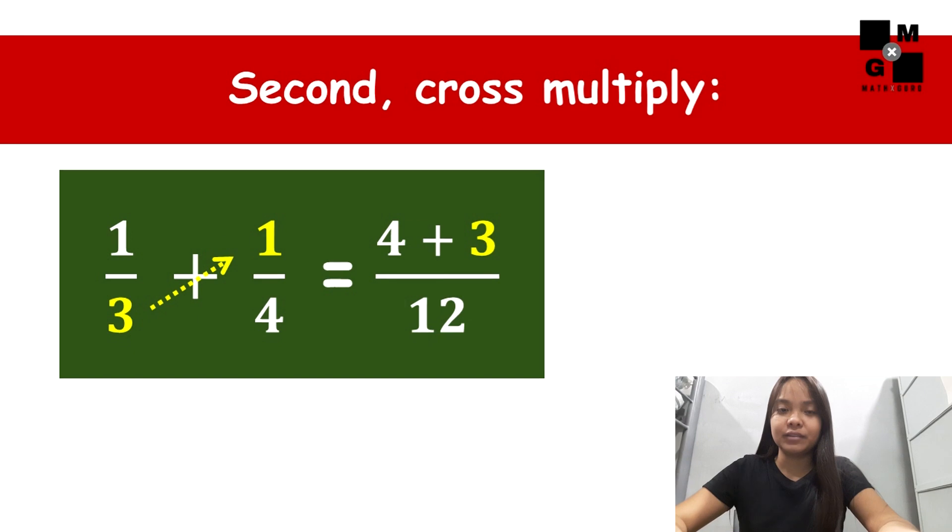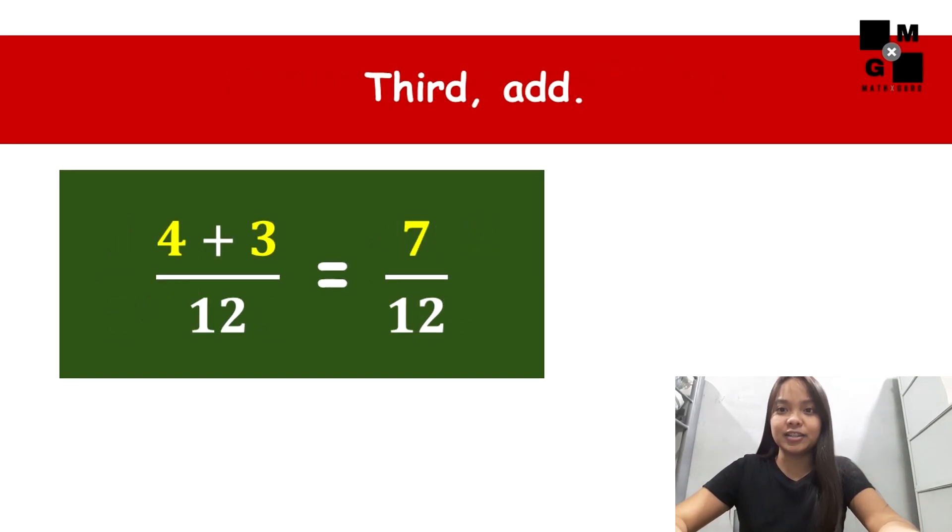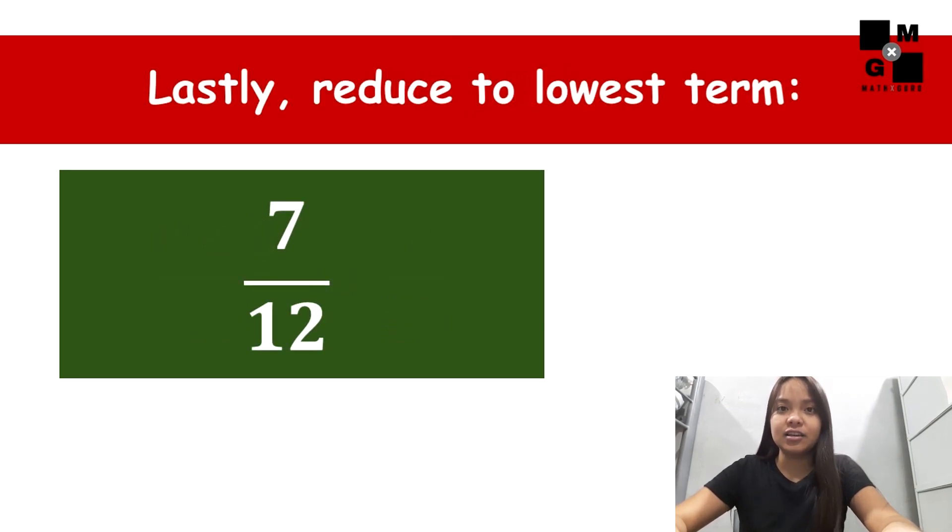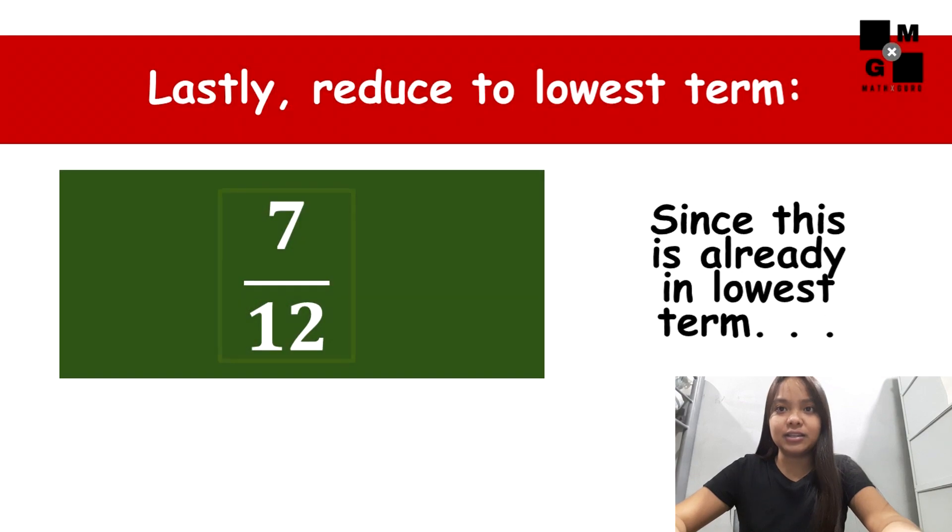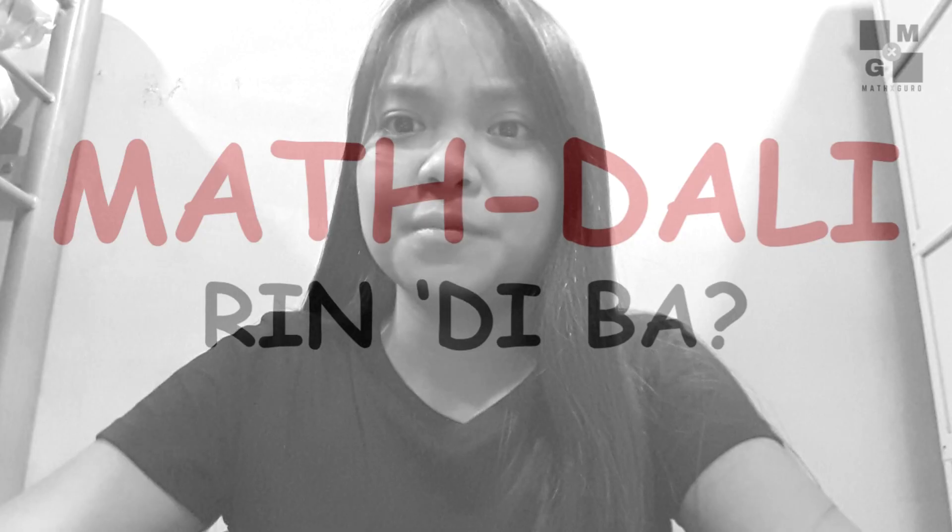Third step, add four and three. You will get the answer of seven. Therefore, the sum is seven over twelve. And lastly, do not forget to check if the answer is already in lowest term. Since seven over twelve is already in lowest term, that means this is already our final answer. It's easy, right?